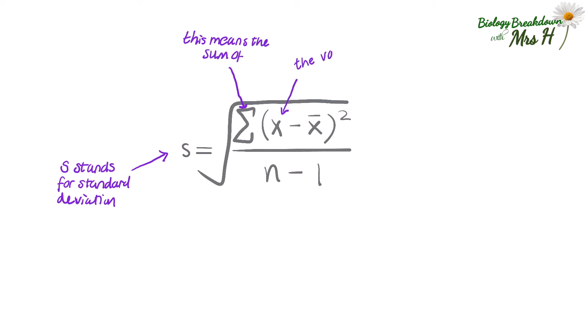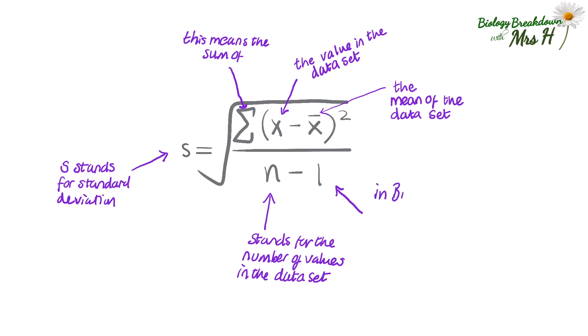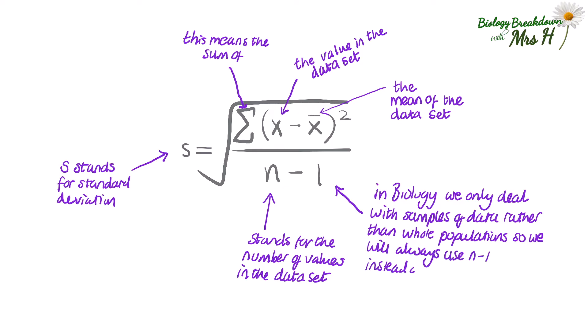X is the value in the data set and X̄ is the mean of that data set. n stands for the number of values in the data set and the minus one is important. We use n minus one because in biology we only deal with samples of data rather than whole populations. If there was a whole population of data then you would use the standard deviation formula with just n but we don't do that in biology so we will be using n minus one.